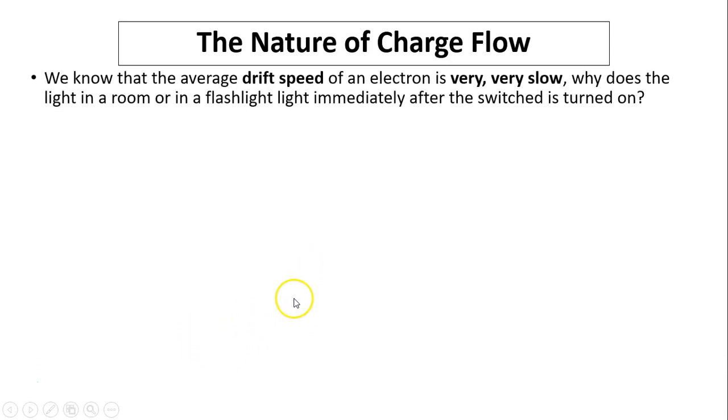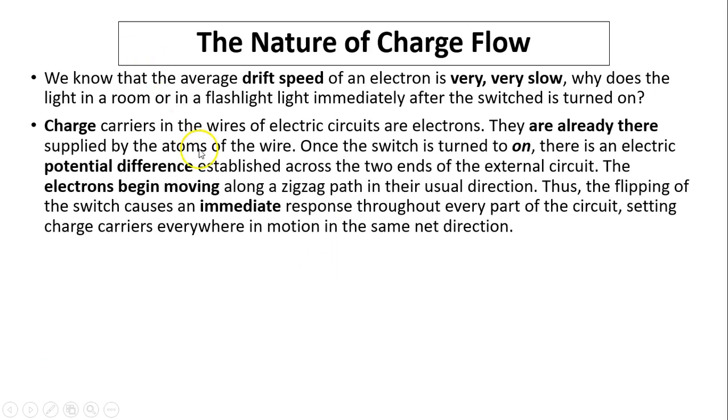Nature of charge flow: So we know the average drift speed of an electron is very, very slow. Then why does the light in a room or in a flashlight light immediately after the switch is turned on? When the switch turns on, there is an electric potential difference established across the two ends of the external circuit.